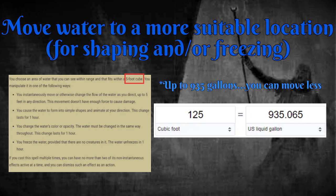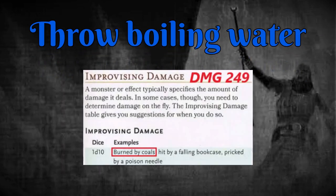On a simpler note, you can move water to throw boiling water at a creature. The Dungeon Master's Guide suggests 1d10 damage for being burned by hot coals, so that seems like a reasonable amount of damage if a creature fails a Dexterity save. Note that DM fiat is a thing here, but most reward creative thinking with a damage value equal or lesser to any other damaging cantrip.